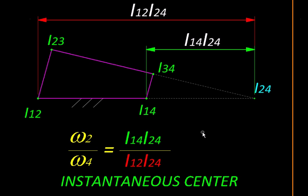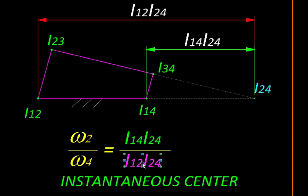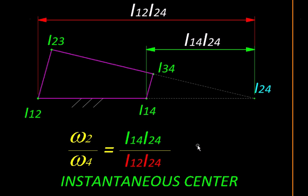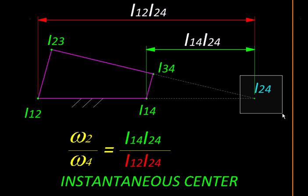By definition, i24 is a point that could be on link two or link four and will have the same velocity. If it were a part of link two, its velocity would be its distance from the center of link two — shown by the red distance — multiplied by omega two. Its velocity as part of link four would be its distance from the center of link four — shown in green — multiplied by omega four. These two velocities are equal by definition, giving us the expression for velocity ratio. This also tells us a trick: if we keep these distances the same, the velocity ratio will remain steady. The trick is not to let this point move.